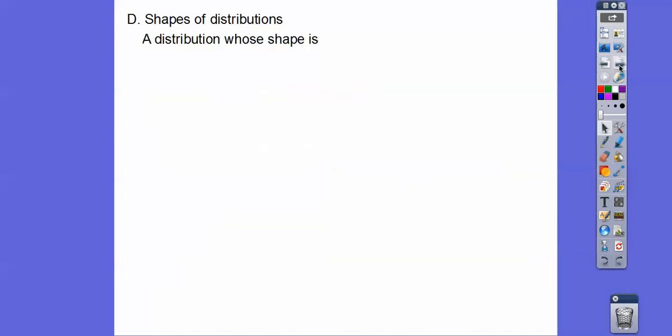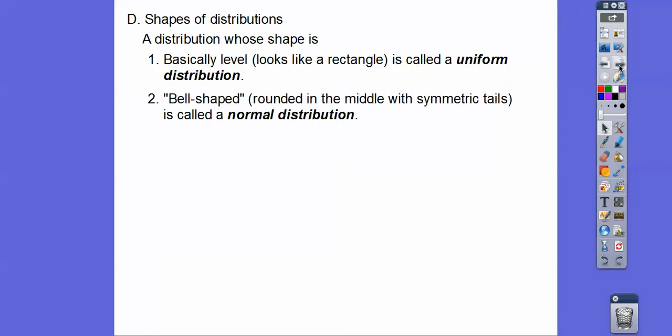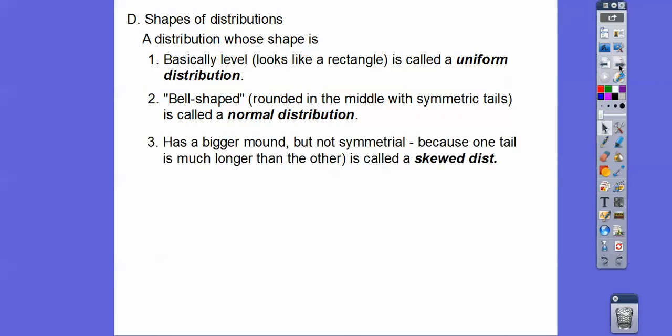So shapes of distributions. A distribution whose shape is basically level, looks like a rectangle sort of, is called a uniform distribution. We had one of those. And then bell-shaped curves are rounded in the middle with symmetrical tails. They're called normal distributions. Those are the ones we like to target a lot. And then if it has a bigger mound on one side, but it's not symmetrical because you have a tail that's longer on the other side, it's called a skewed distribution.